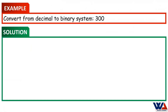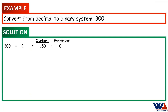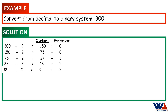Here is another example to convert from decimal to binary system. The decimal number is 300. The maximum value that can be stored in one byte is 255. Since 300 is greater than 255, it is expected that we need 2 bytes to store this decimal number in the computer. Start by dividing 300 by 2 to get the quotient 150 and the remainder 0. Then divide 150 by 2 again to get the quotient value 75 and the remainder 0. Continue dividing the quotient values by 2 until you get the quotient value of 0.